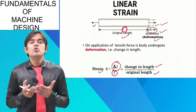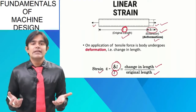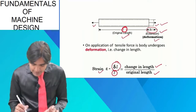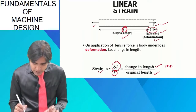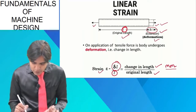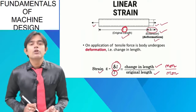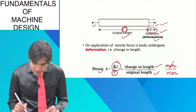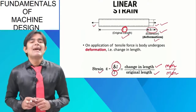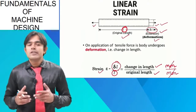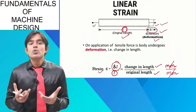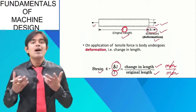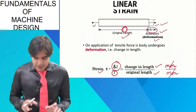Strain is a unitless parameter. The dimension of the change in length is mm and the dimension of the original length is also mm — both cancel out, confirming that strain is unitless.